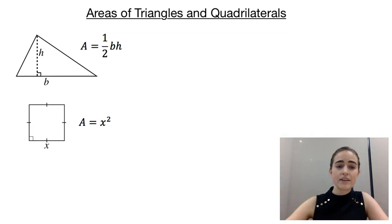Next up, we've got squares. If we know the length of one side, if we call that x, then the area would be x squared. So we're going that x times itself.